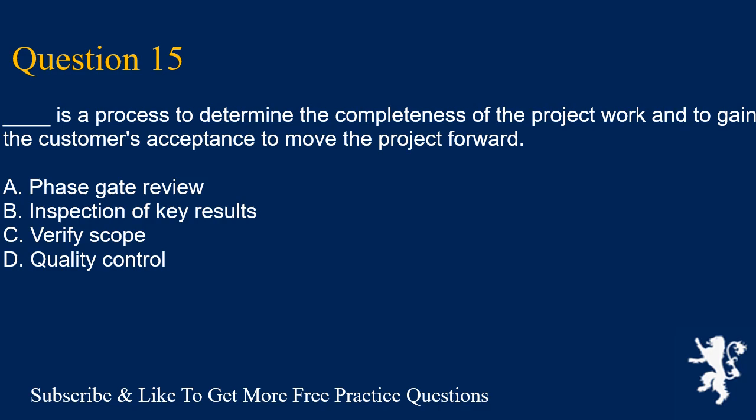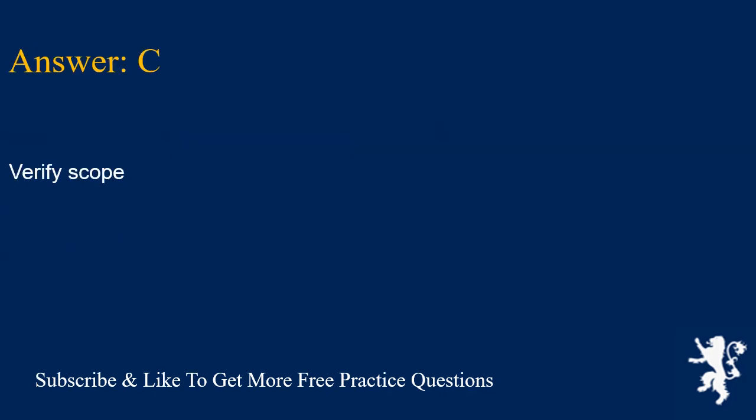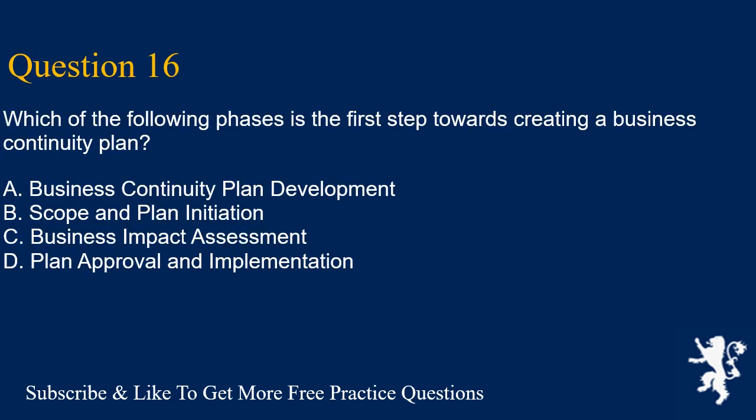Question 15: Which of the following is a process to determine the completeness of the project work and to gain the customer's acceptance to move the project forward? A. Phase gate review. B. Inspection of key results. C. Verify scope. D. Quality control. Answer is C. Verify scope.